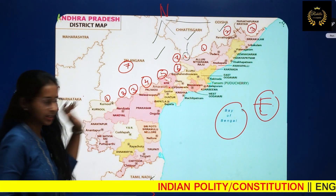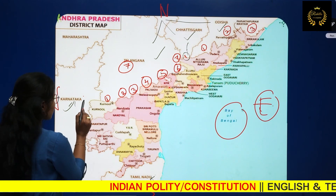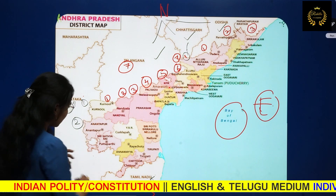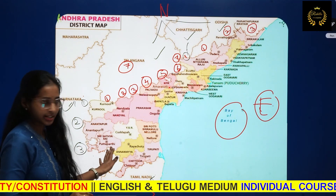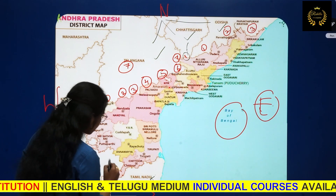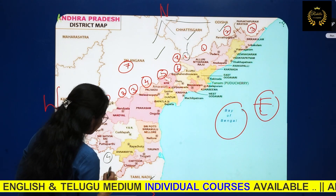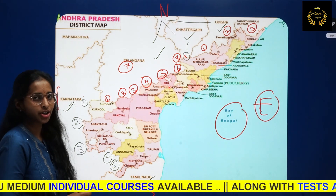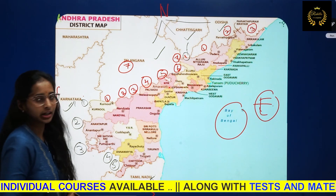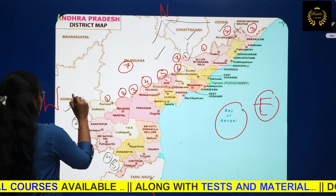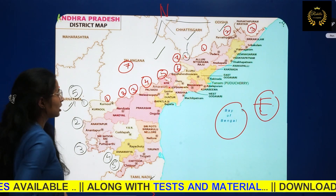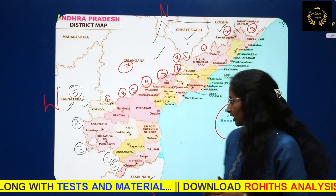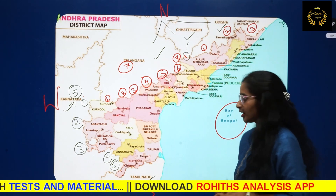Karnataka border districts: first is Kurnool, second is Anantapur, third is Puttapatri (Sri Sathyasai), fourth is Annamaya, and fifth is Chitturu district. So 5 districts of AP share border with Karnataka.